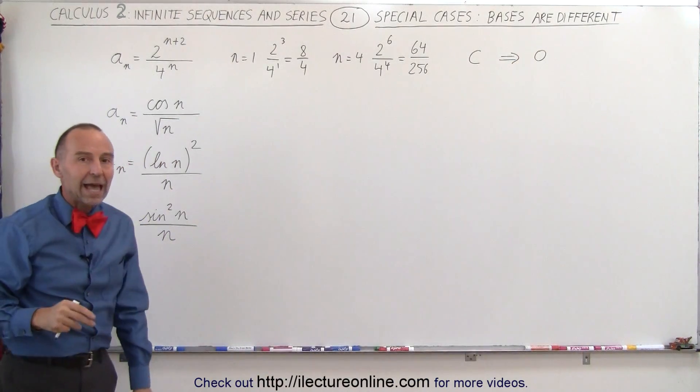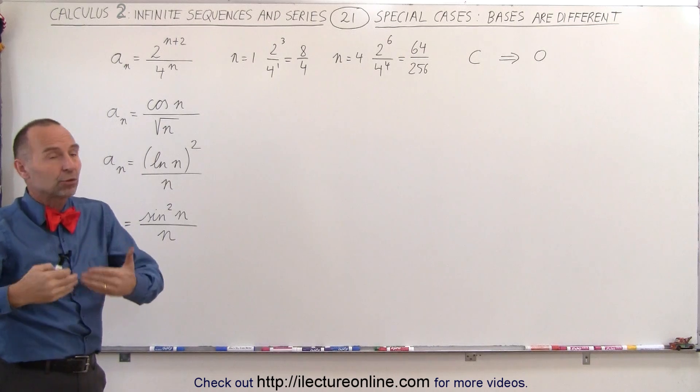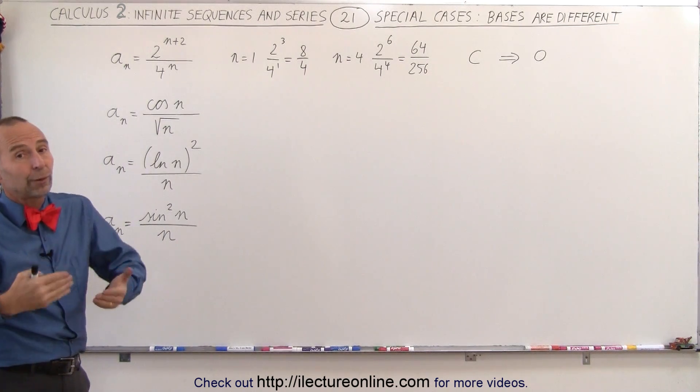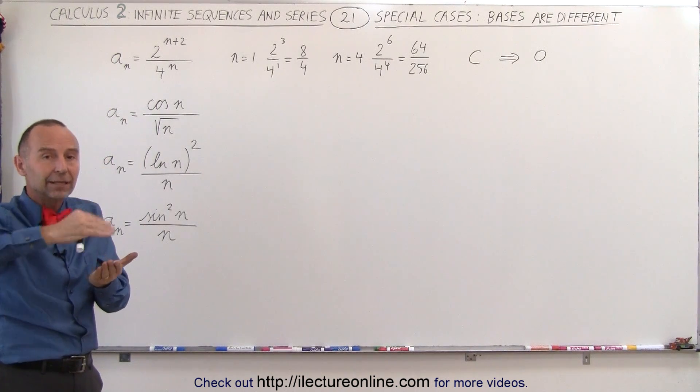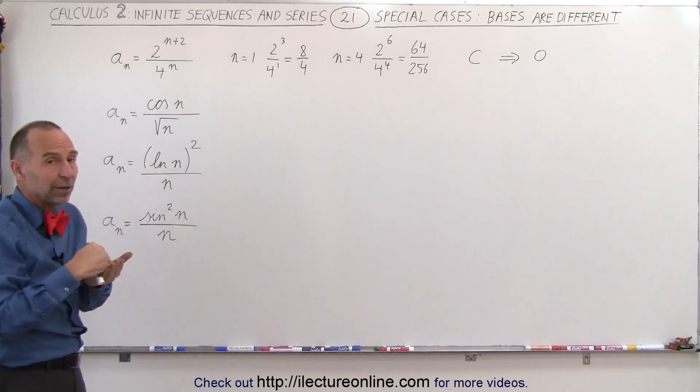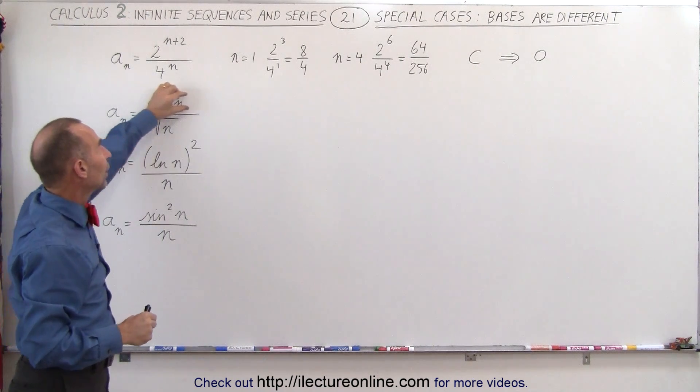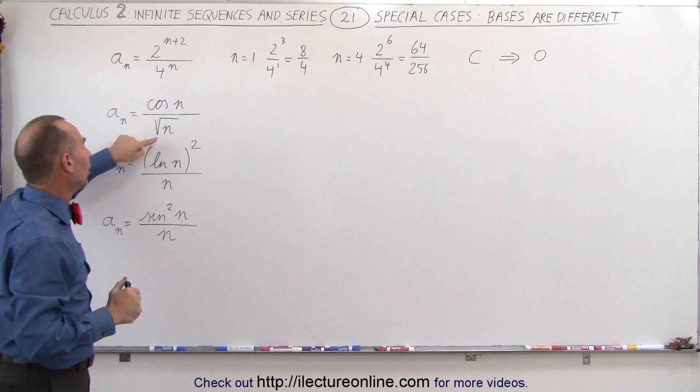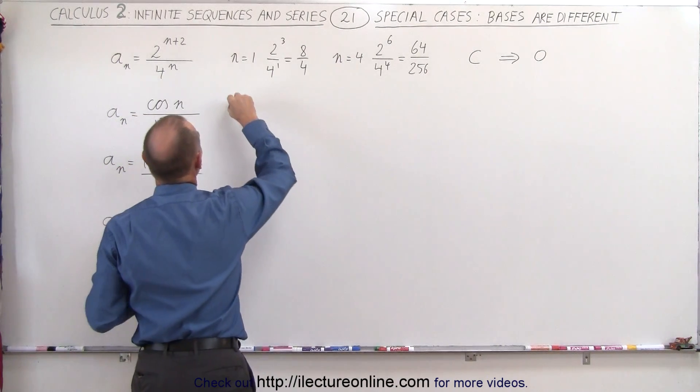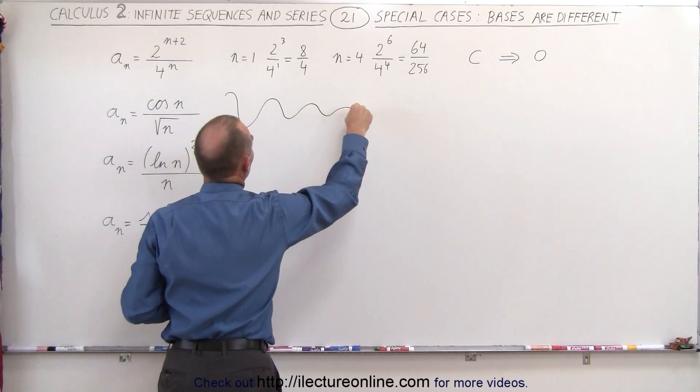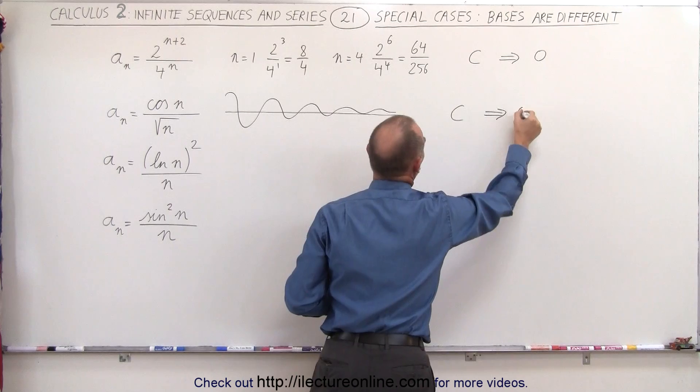In the second example, we have a cosine function in the numerator and the square root of n in the denominator. The square root tends to make a number smaller, but as n becomes very large, the square root of a very large number is still large. In the numerator, we have a function that will vary in value between 1 and negative 1, never become larger than 1, never become smaller than negative 1. The numerator stays relatively fixed between a very narrow range of values. The denominator, as n becomes large, will continue to grow, and eventually the function will converge into a smaller and smaller number. This will converge to the value of 0.